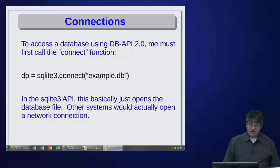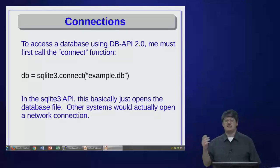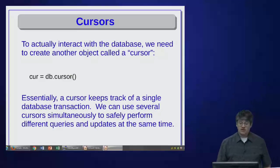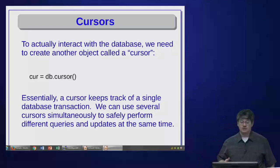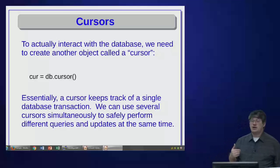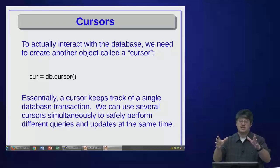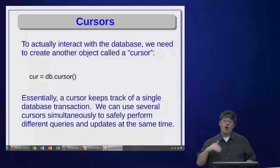So we say db = sqlite3.connect('example.db') and that gives us the database object. If we were connecting to Postgres or MySQL, we'd open a network connection that could fail and require error handling. SQLite is simpler — we just open the file. To actually interact with the database, we create a cursor object by calling db.cursor(). A cursor keeps track of a single database transaction. If I insert 30 records, I loop through them and commit the entire transaction at once — making it atomic.